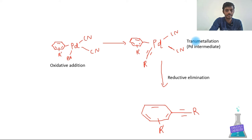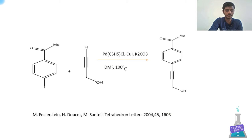In the mechanism of this first example: the first step is oxidative addition, where the aryl group and the halide leaving group add to palladium with its two ligands. After that, transmetallation occurs via the copper cycle, forming the palladium intermediate where bromine is replaced with the terminal alkyne. Finally, reductive elimination happens, the palladium is regenerated, and the product is formed.